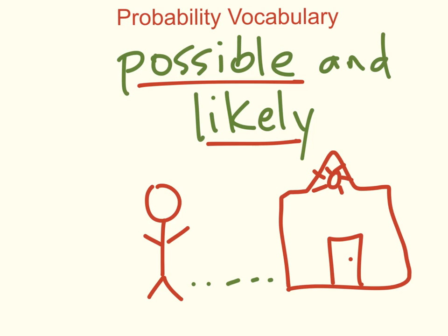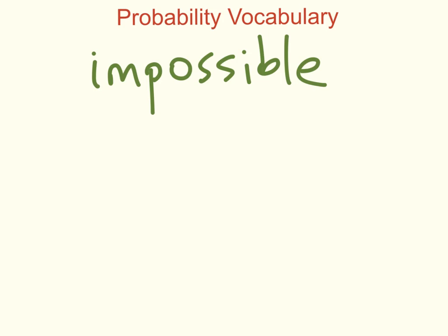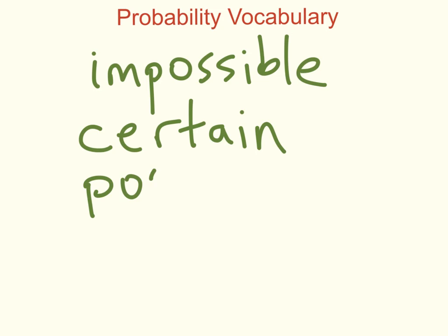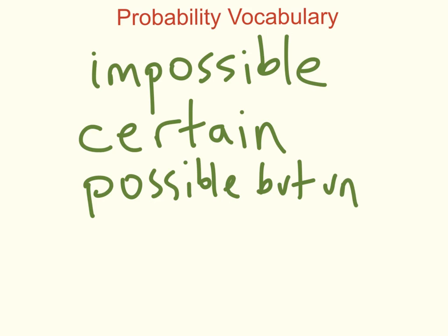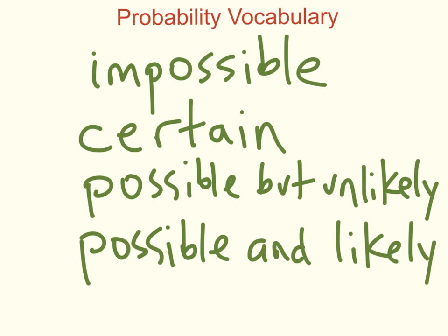We learned that some events are impossible, which means they will not happen ever. Some events are certain, which means they will always happen. Some events are possible but unlikely, which means they could happen but they probably won't. And other events are possible and likely, meaning they could happen and they probably will.